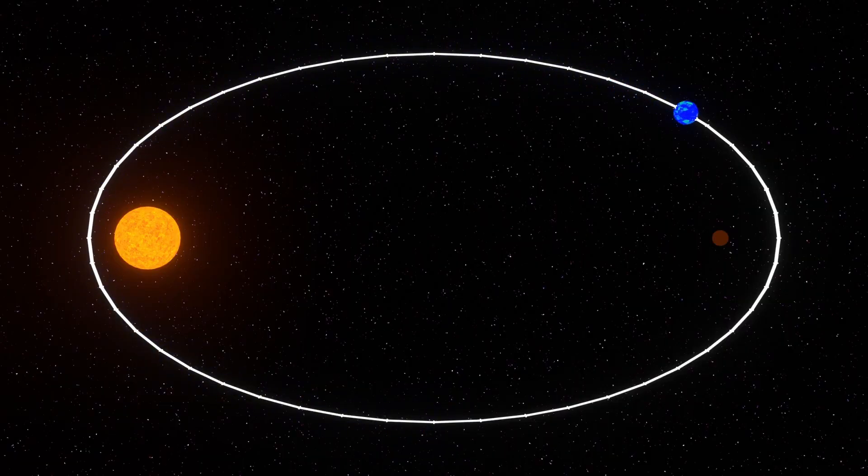This means that any planet orbiting the Sun follows an elliptical shape. The Sun is placed at one of the two foci points.